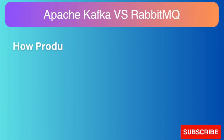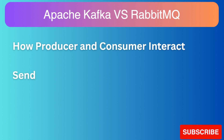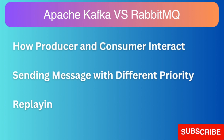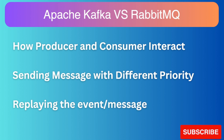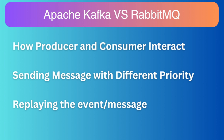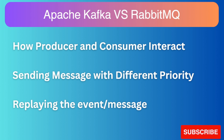The next question is: how is Apache Kafka different from RabbitMQ? Both Kafka and RabbitMQ are messaging queue systems used in stream processing. The first difference is how producers and consumers interact. In RabbitMQ, the producer sends a message and monitors whether it reaches the intended consumer. In Kafka, the producer publishes the message to a topic regardless of whether consumers have consumed it or not.